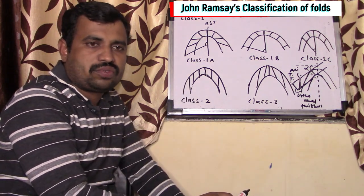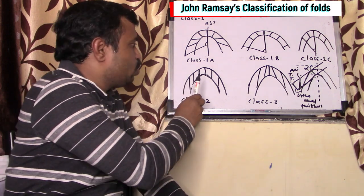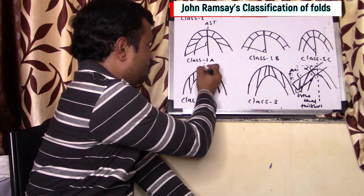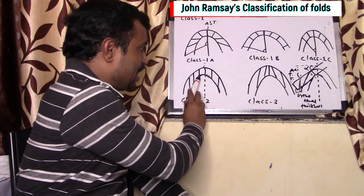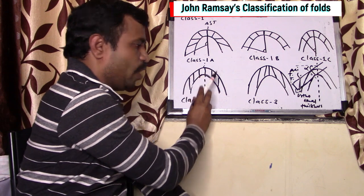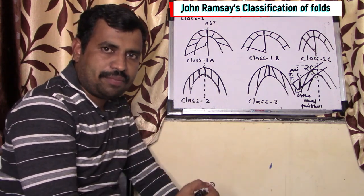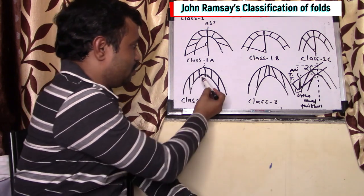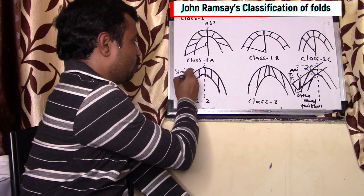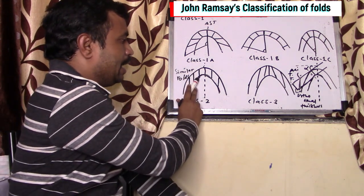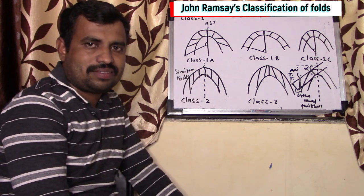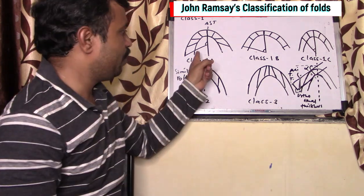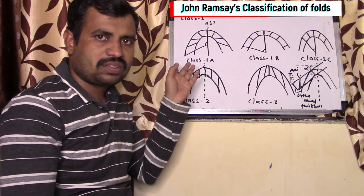Now we will discuss class 2 type of folds. In class 2, the dip isogons are parallel. The points on both limbs having the same angle of inclination are similar to the axial surface trace, meaning the dip isogons are parallel to the axial surface trace. These types of folds are called similar folds, where the curvature of the outer arc and the curvature of the inner arc are the same. In class 1 the isogons are convergent, whereas in class 2 they are parallel.